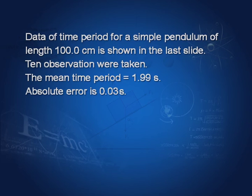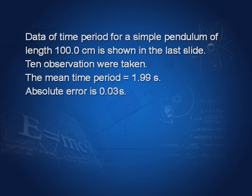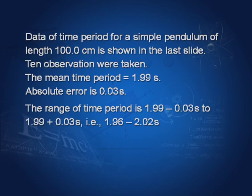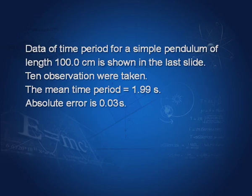To repeat: the data of time period for a simple pendulum of length 100.0 centimeters shows 10 observations. The mean time period is 1.99 seconds. The absolute error is 0.03 seconds. The range of time period is 1.99 ± 0.03, meaning the actual time period lies somewhere between 1.96 and 2.02 seconds.